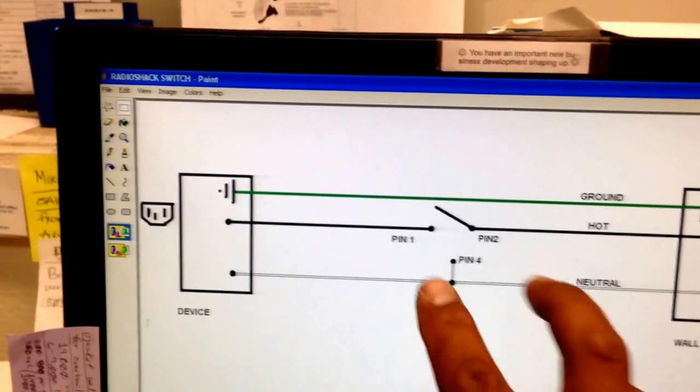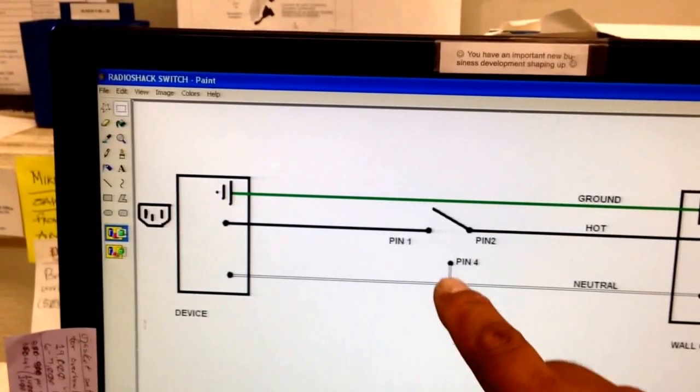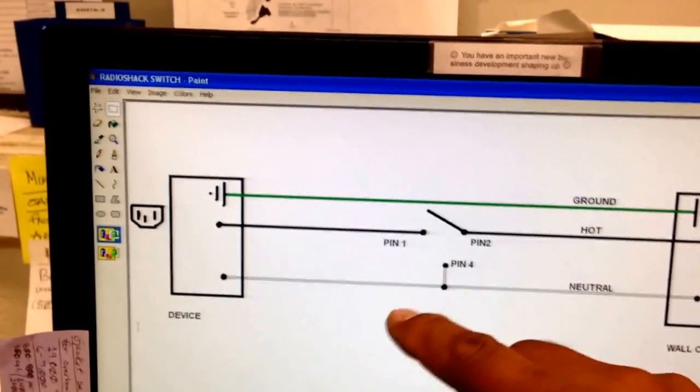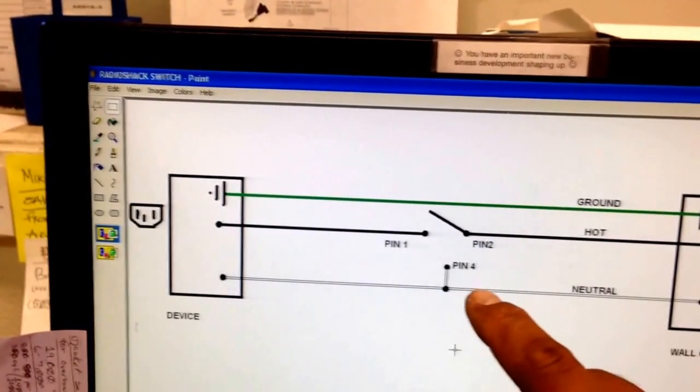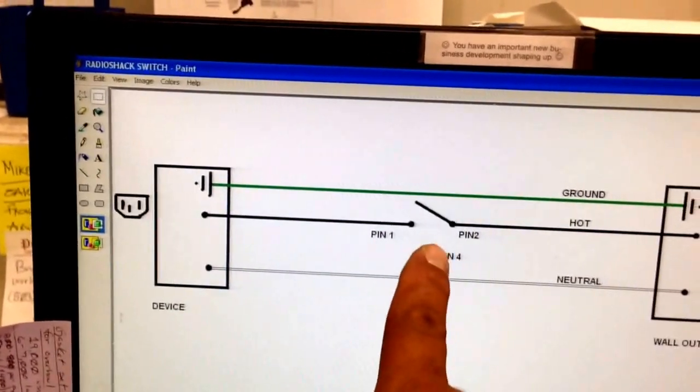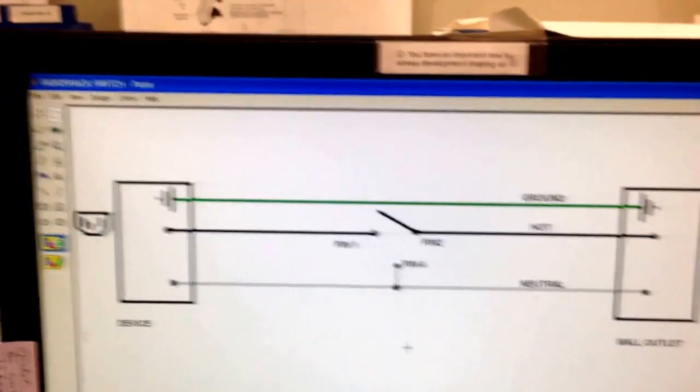So you basically take these two, join them together. Now if you want to extend this, you can use another piece of wire and take it to the switch if you're going remote. But essentially you're taking these two wires, connecting them together and putting them into pin four. That is where the magic happens.